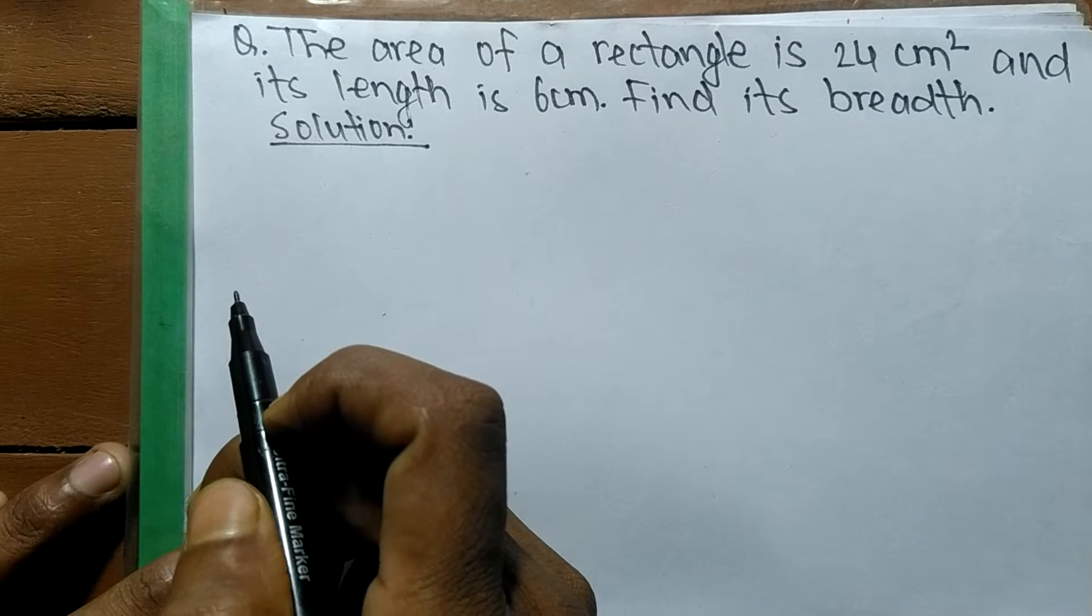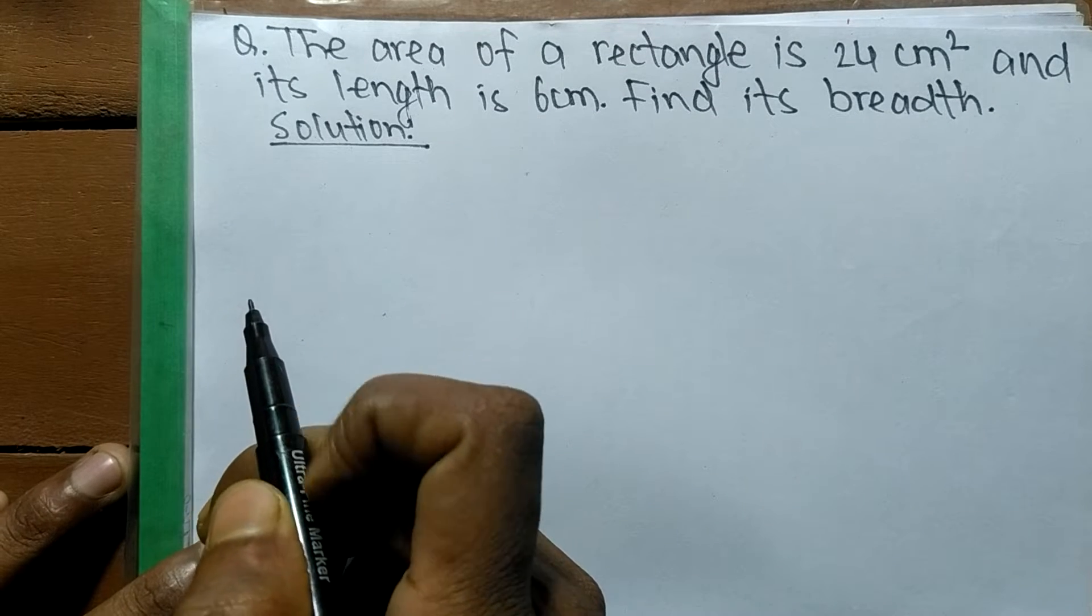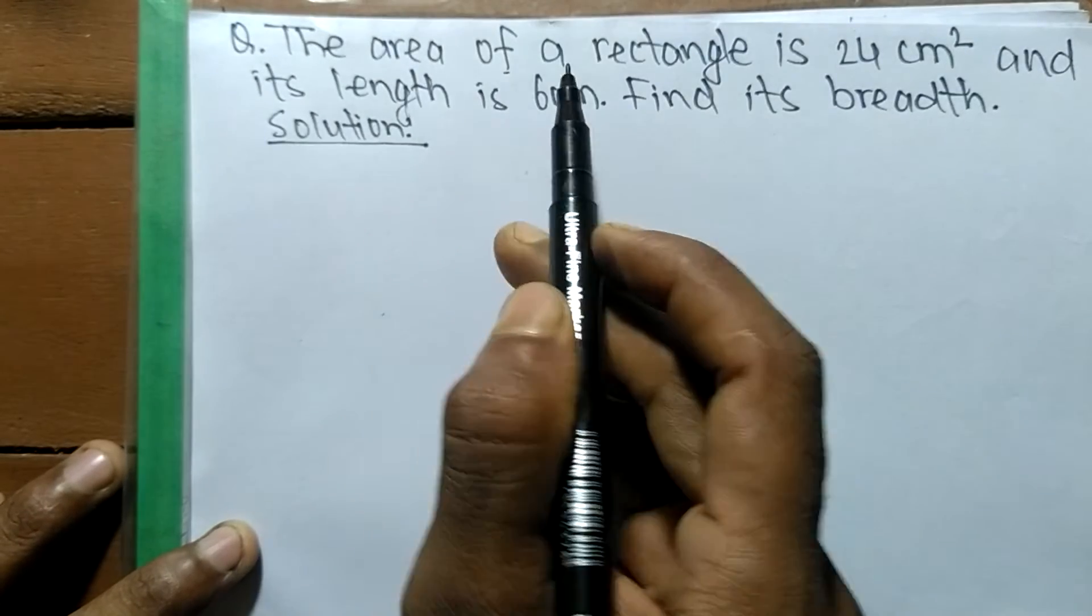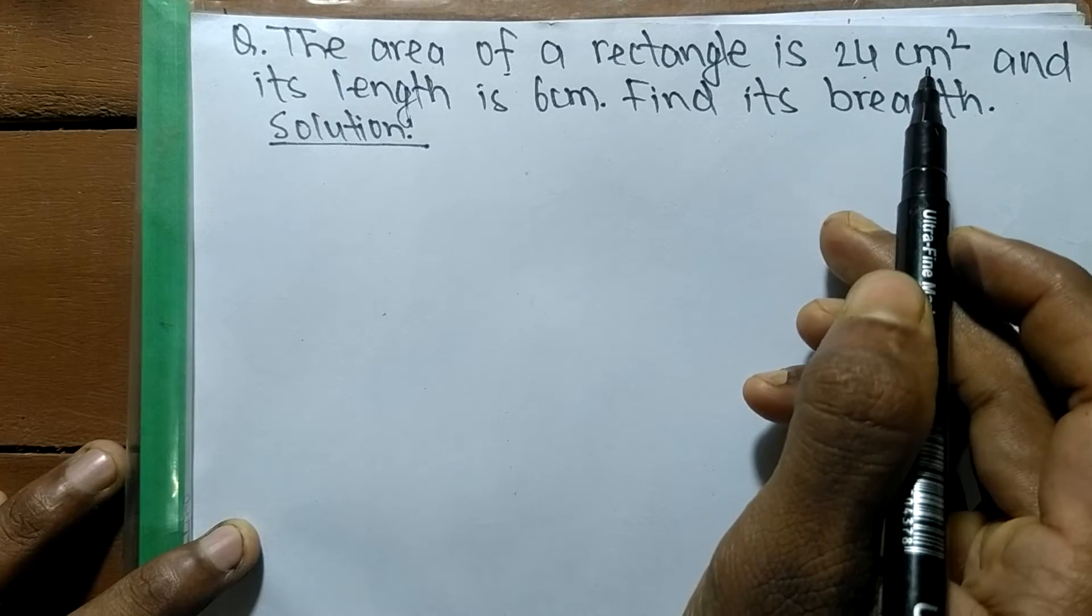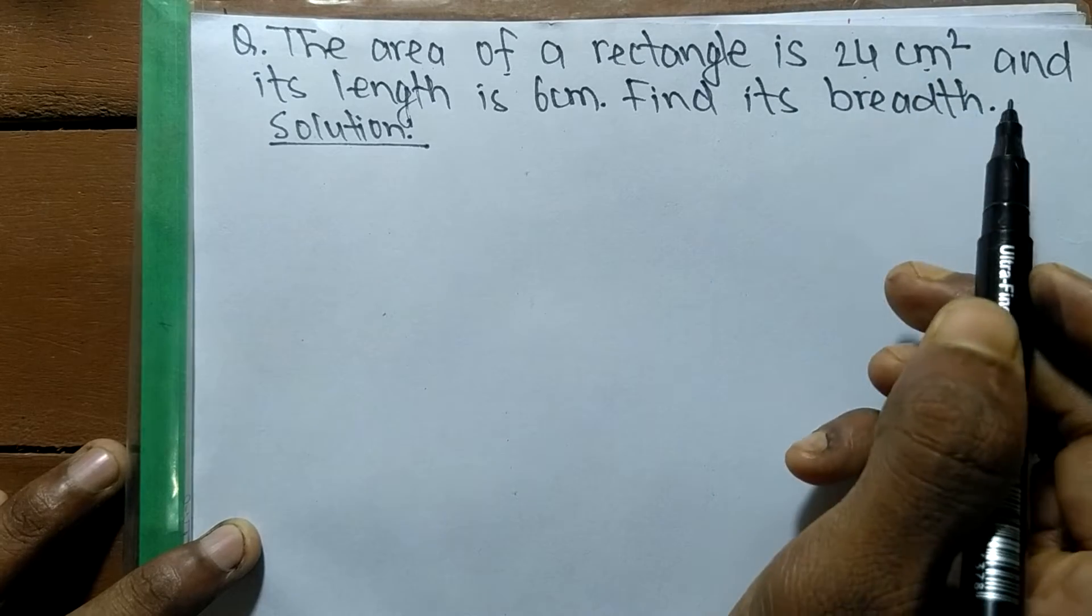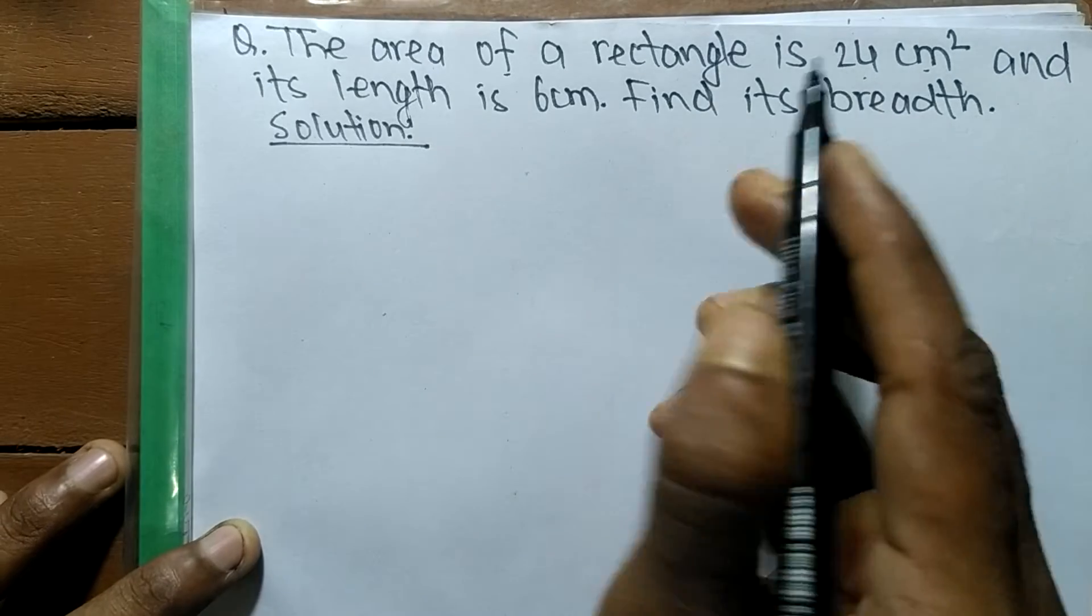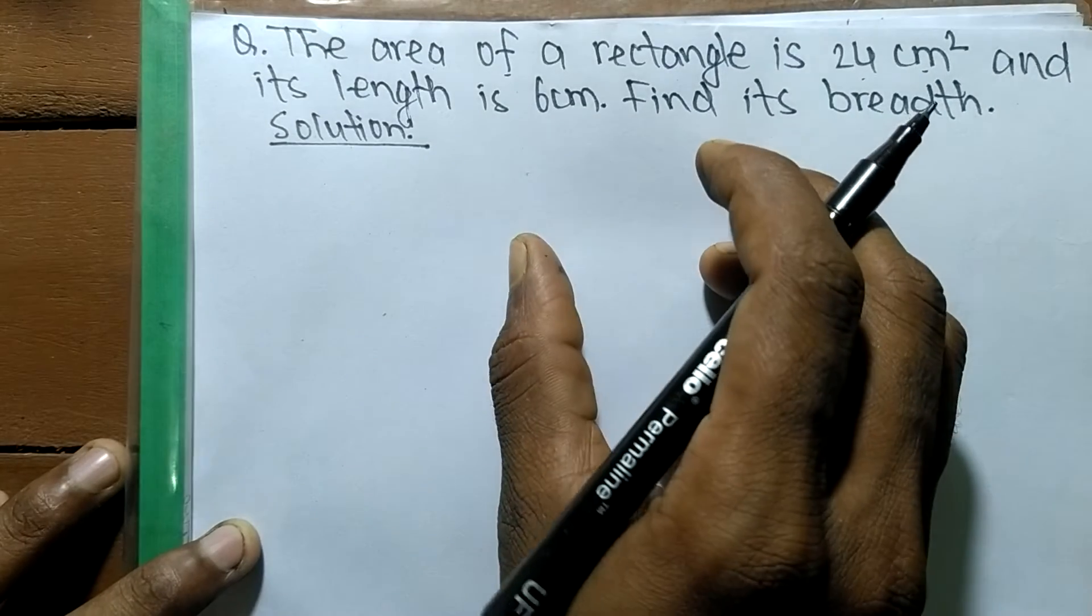So today in this video we are going to solve a word equation. The question is: the area of a rectangle is 24 centimeter square and its length is 6 cm, find its breadth. While solving, first of all we have to write down the given.